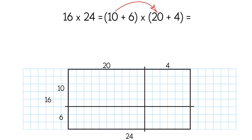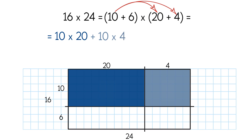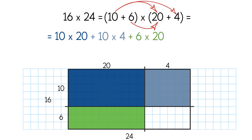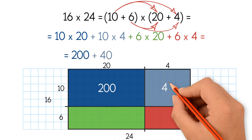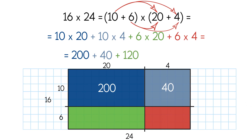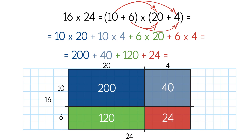We multiply 10 times 20, which is the area of the first smaller rectangle. Then we multiply 10 times 4, which is the area of the second smaller rectangle. Next, we multiply 6 times 20, which is the area of the third smaller rectangle. Finally, we multiply 6 times 4, which is the area of the fourth smaller rectangle. We get 200, 40, 120, and 24 as the partial products. We add them up to find the total area or the product of 16 and 24. So the answer is 384.